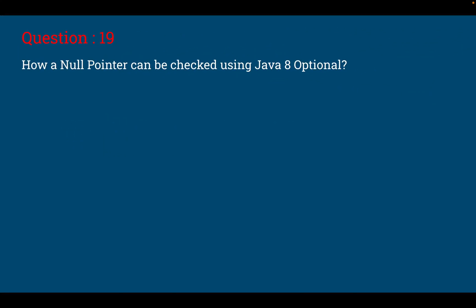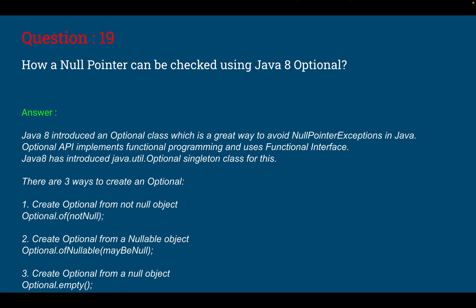Question number 19: how can a null pointer be checked using Java 8 Optional? Java 8 introduced the Optional class, which is a great way to avoid NullPointerException. The Optional API implements functional programming using functional interfaces. Java 8 introduced java.util.Optional as a singleton class. There are three ways to create an Optional: first, from a non-null object using Optional.of(nonNullValue); second, from a nullable object using Optional.ofNullable(mayBeNull); and third, from a null object using Optional.empty().